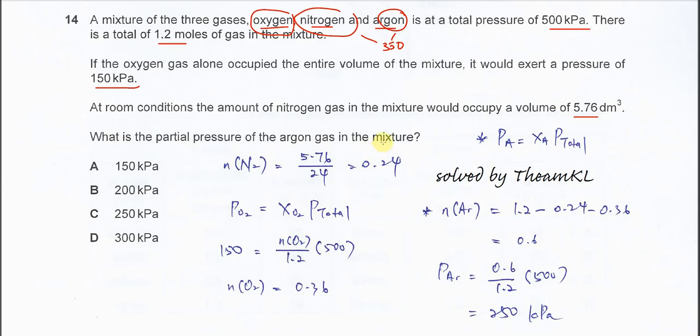This part is quite challenging. First, you need to know how to use Dalton's law. The partial pressure of the species equals the mole fraction of the species times the total pressure. This is the formula you must know.